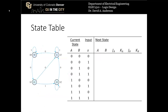Let's move on to a more complicated example — one from the textbook, also used in a previous lecture. This state machine has two bits representing the states, which means we'll need two flip-flops. It has a single input X. We fill out the state table by assigning next states to each current state plus input combination.